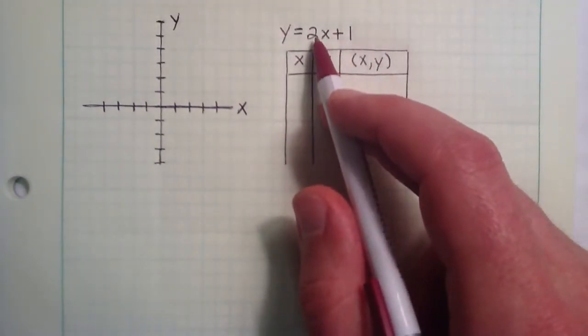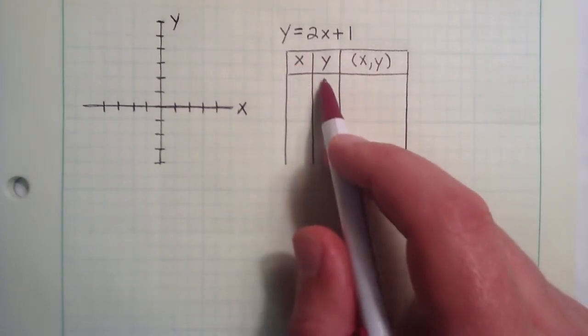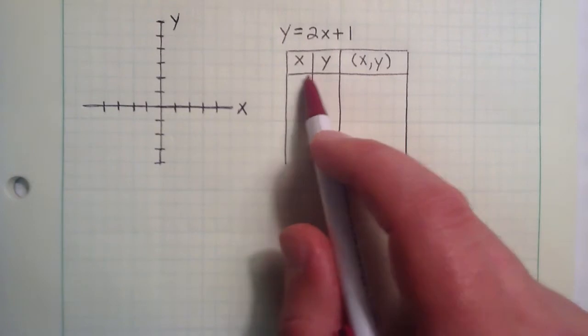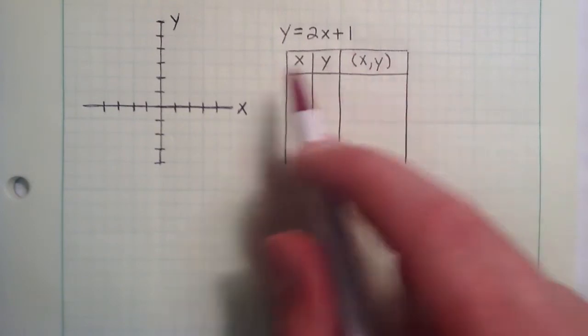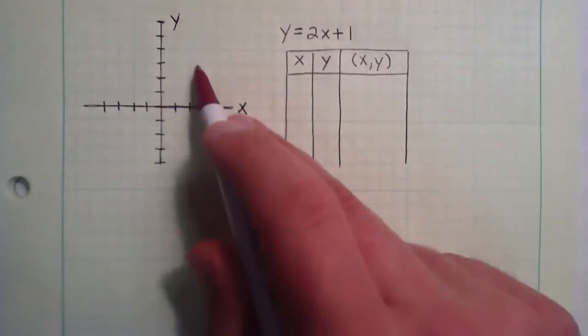And basically what we're going to do is we're going to pick some x components, and we're going to find the corresponding y component, and then from that information we'll build a point and plot it on our graph. And after we get a few points, we can sketch the line.